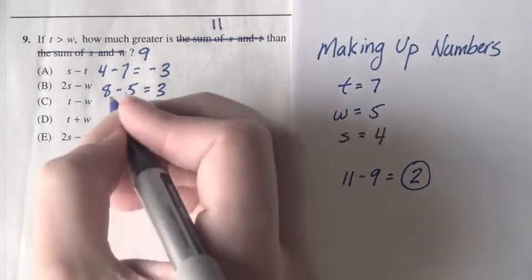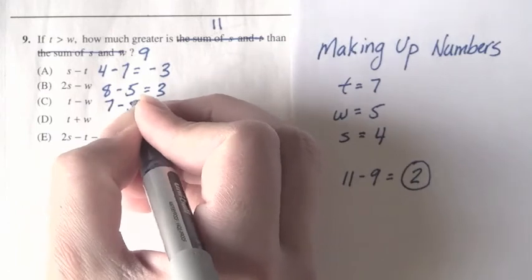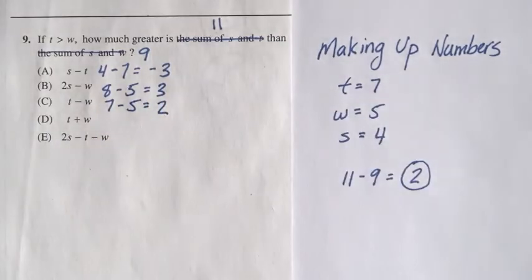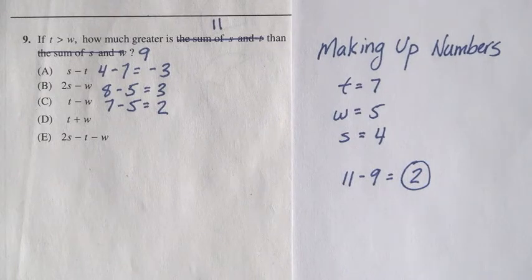C says t minus w, that's 7 minus 5, or 2. We've found what we want, but when we make up numbers, we should check all the answer choices just to be safe.